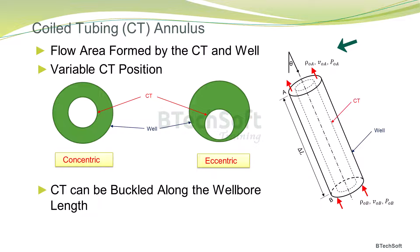The well annulus segment is inclined at an angle theta to the vertical, and the red arrows indicate the flow direction to be from bottom to surface. Note that the coil tubing position can vary in the well bore as shown in the cross-sectional view, from a concentric to an eccentric position.